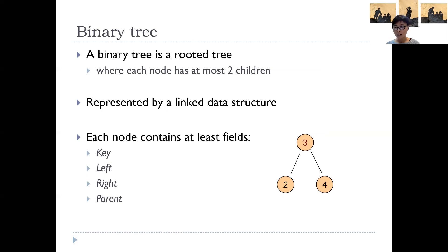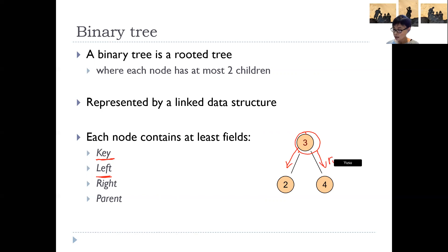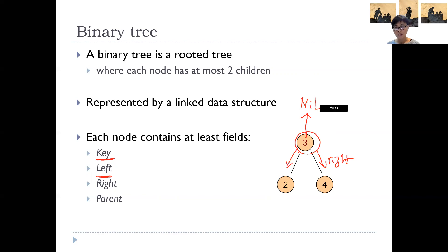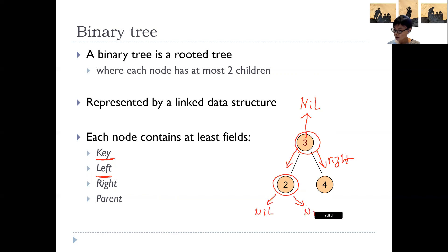Every node in the tree contains a domain which stores the key value — in this case, a number. It also stores a pointer pointing at its left child, another pointer pointing at its right child, and in general a node also stores a pointer pointing at its parent. If it's the root, then the parent pointer is set to nil — an empty pointer, which in Python is None. So for node two, for example, its left child and right child are nil, but its parent pointer points at node three. Once every node has stored all this information, we encode the tree information completely.